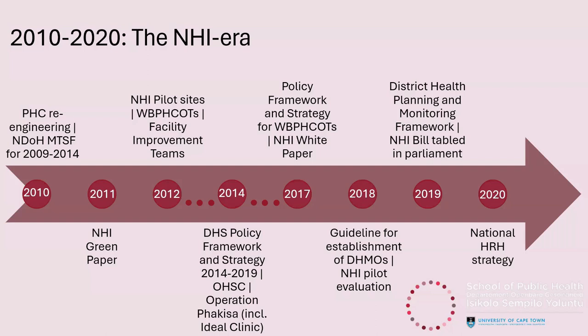In 2018, we saw the guideline for establishment of the district health management office, and NHI pilot evaluation reports showed quite mixed results, often related to broader issues like health resource shortages. In 2019, the NHI Bill was approved by Cabinet with focus on CUPs as the sub-district level contracting unit but with a slightly reduced function for the district health management office. This takes us to 2020 and COVID. We are working towards a new district health system strategy, but in the light of COVID and the move towards NHI, there is a lot of unclarity and budget issues — a difficult and precarious moment for the district health system.